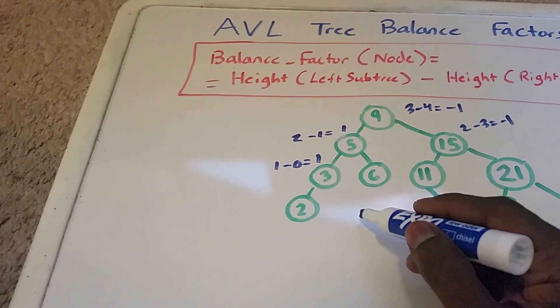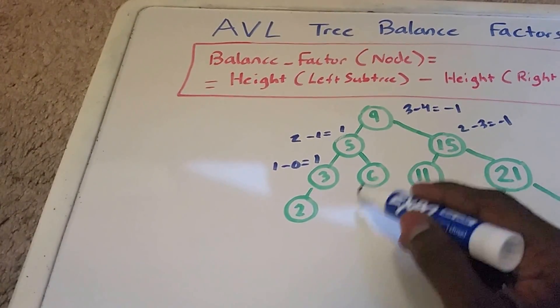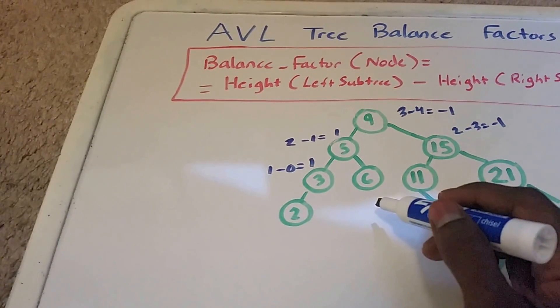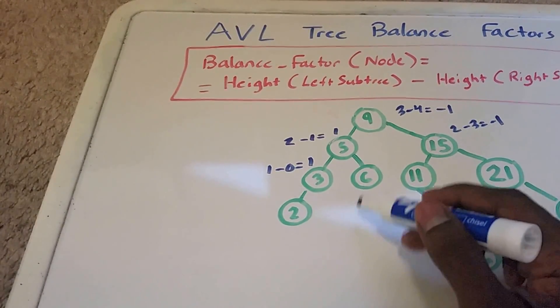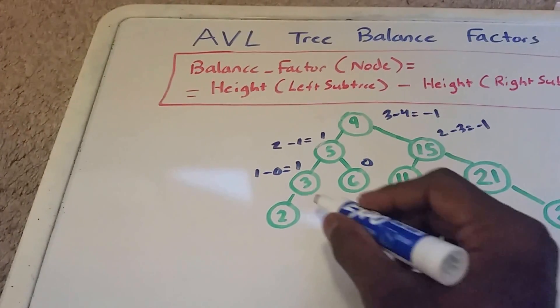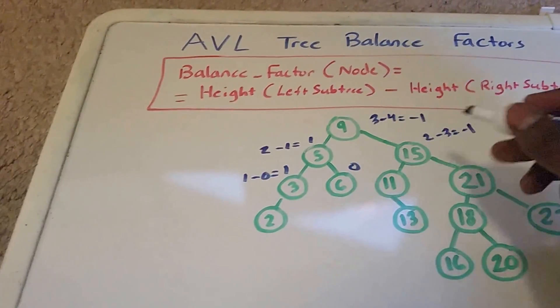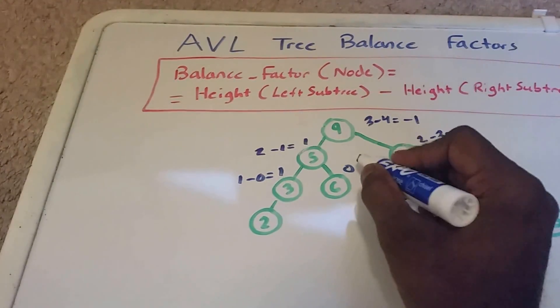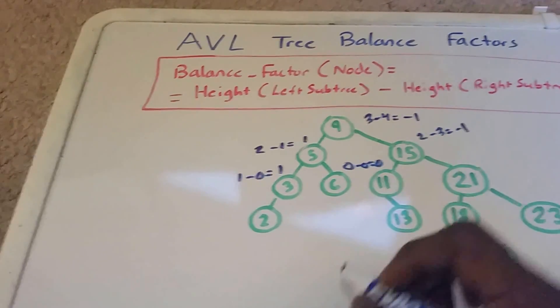And this 6 here doesn't have 1 on the left, nor have 1 on the right. And by 1 I mean doesn't have a left subtree and doesn't have a right subtree. So this balance factor is 0, or you could say 0 minus 0, so it equals 0.